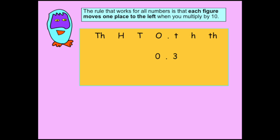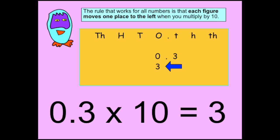The rule also works for decimal numbers. Here we have 0.3. If the 0 moves one place to the left, it doesn't hold any value. But we move the 3 to the left and we get an answer of 3.